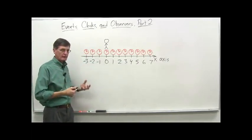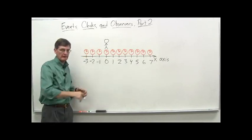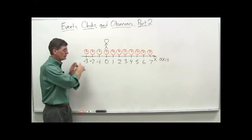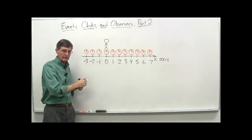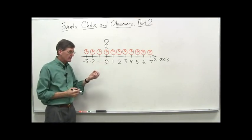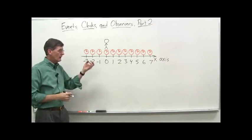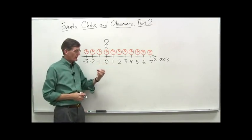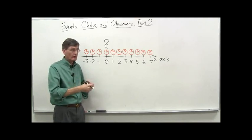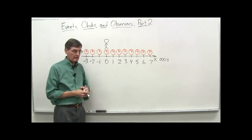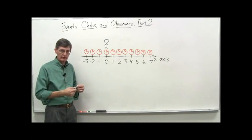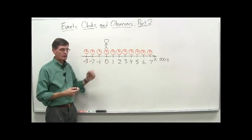All right. We ended the last video clip, which was on part one of Events, Clocks, and Observers. We are talking about a lattice or grid of clocks that we're going to use to specify when something happens. Actually, not only when, but where. But it raises the question of how do we synchronize the clocks? How do we make sure they're synchronized? And so that's what we're going to work on in this video clip.